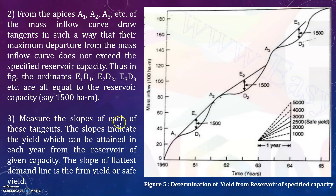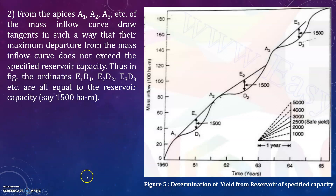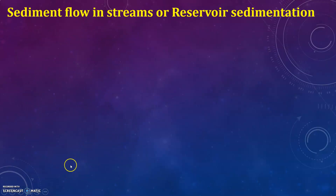Now measure the slopes of each of these tangents. The slopes indicate the yield which can be attained in each year from the reservoir of a given capacity. The slope of the flattest demand line is the firm yield or safe yield. This is how you calculate the safe yield from the reservoir of a given capacity.